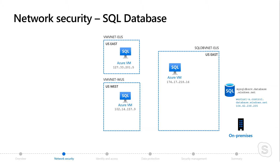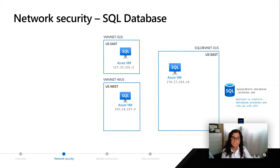Additionally, you might try to connect from on-premises, and ultimately you're trying to connect to the database on the right, which doesn't technically sit in a virtual network. Right now we're just talking about Azure SQL Database. There are four main options for setting up connectivity from a network security standpoint.